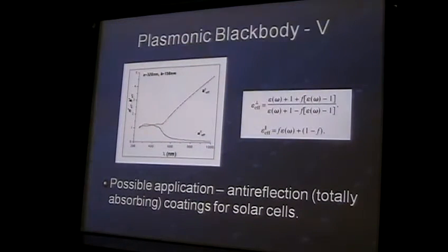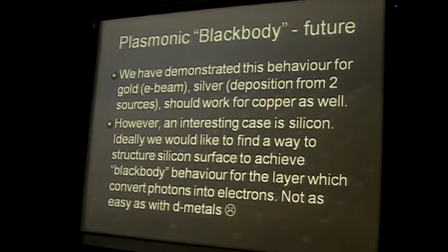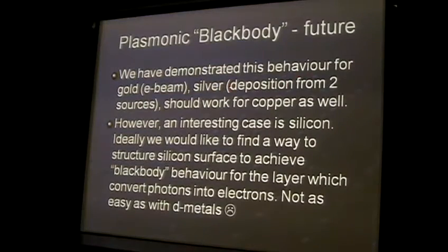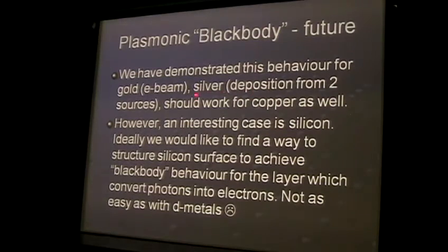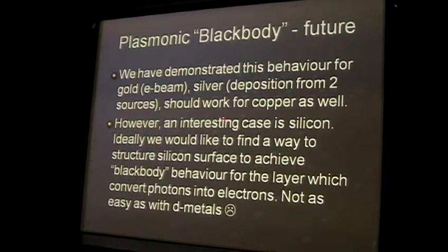A possible application is solar cells, but it's useless to use gold for solar cells. We demonstrated that the same behavior can be achieved not only with gold but with silver. Gold, silver, and copper are different from all other materials because they have free electrons and interband transitions, and it's actually those transitions that determine the wavelengths at which this structure operates. For silicon it's a bit different, but I think it's possible, and it's an open question whether we can make a silicon structure to transfer light to the place where it would produce electrons.